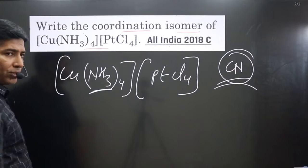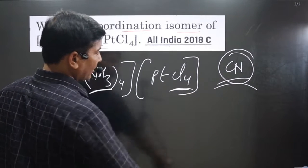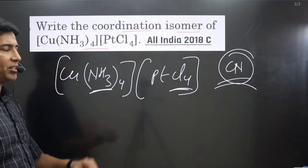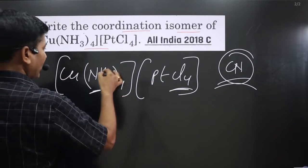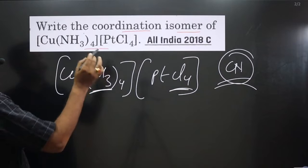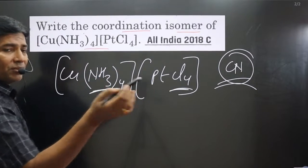You can see in this case we have neutral ligand. In this case unidentate negative ligand is there. They will exchange their position. Cl will come in place of NH3 and NH3 will be there in place of Cl.